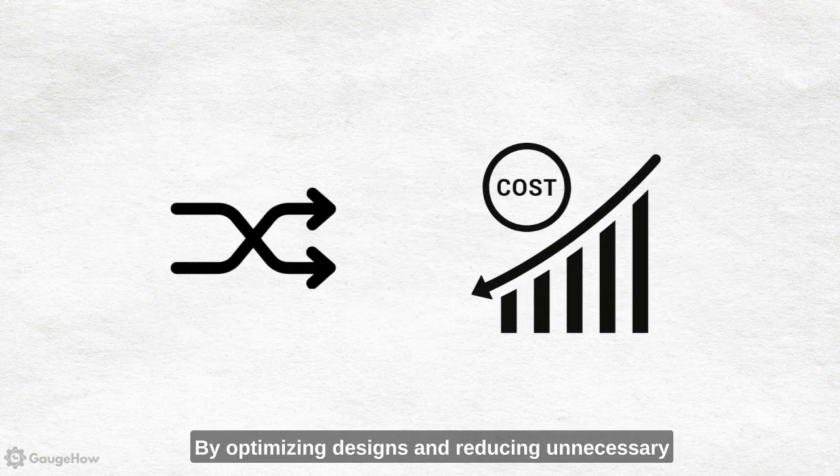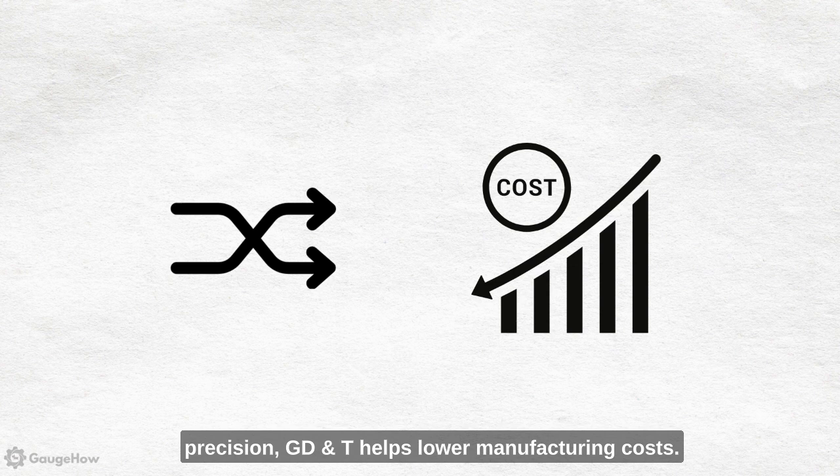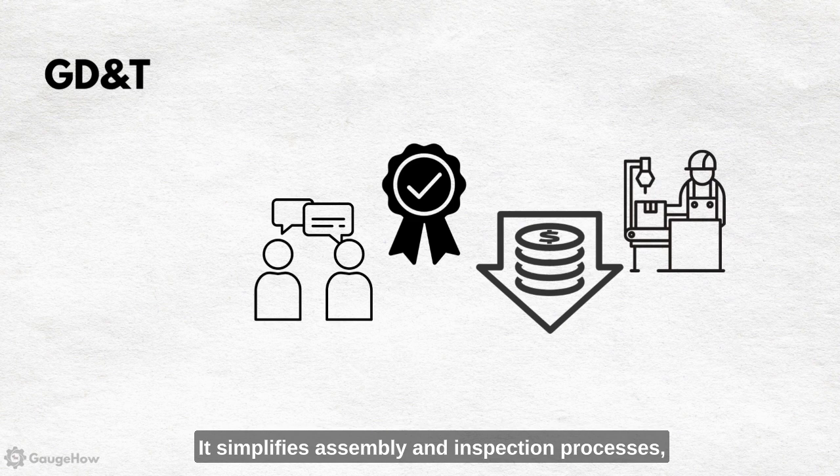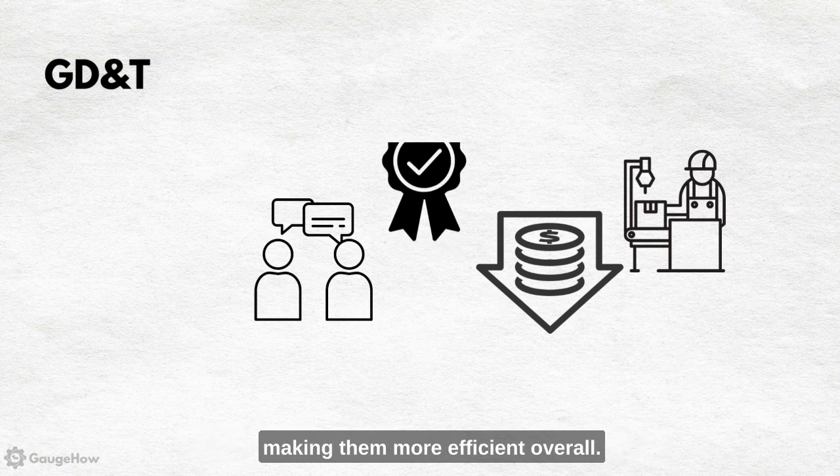By optimizing designs and reducing unnecessary precision, GD&T helps lower manufacturing costs. It simplifies assembly and inspection processes, making them more efficient.